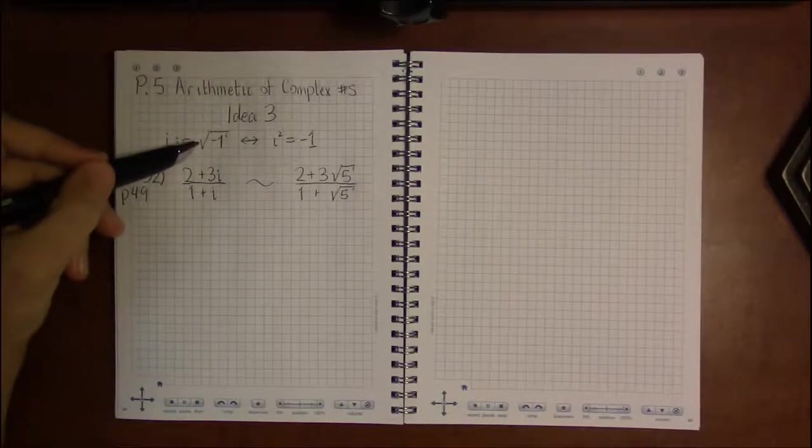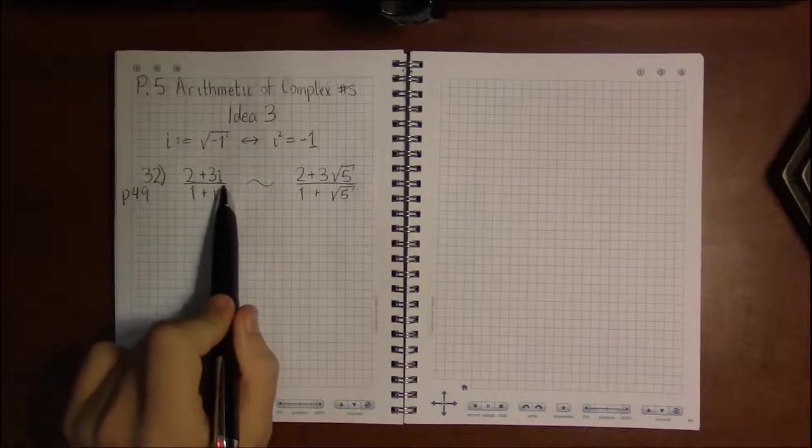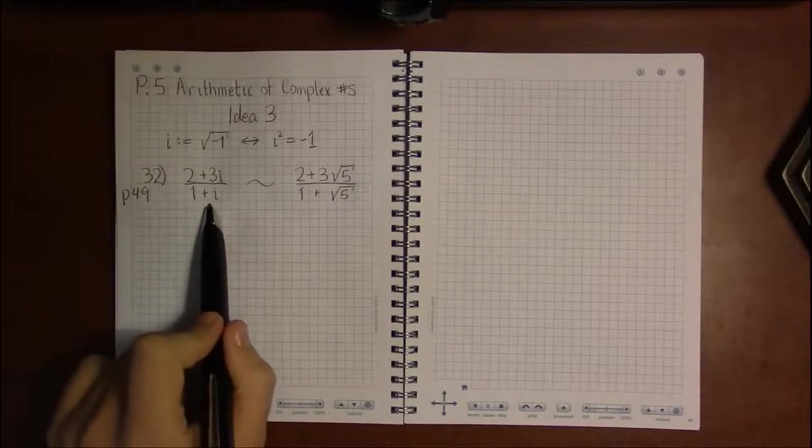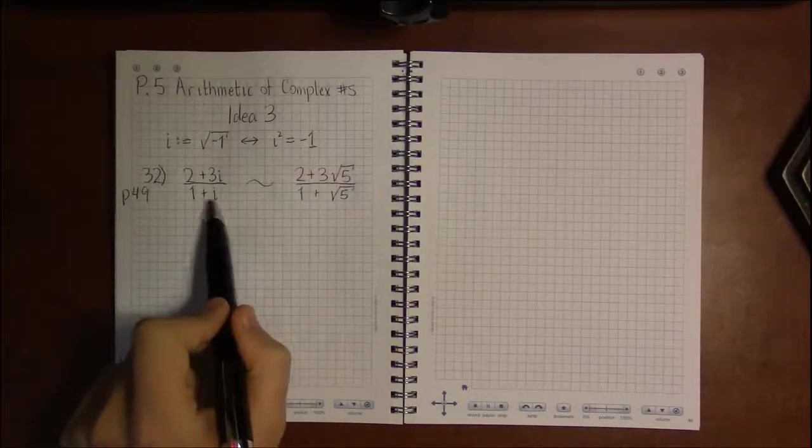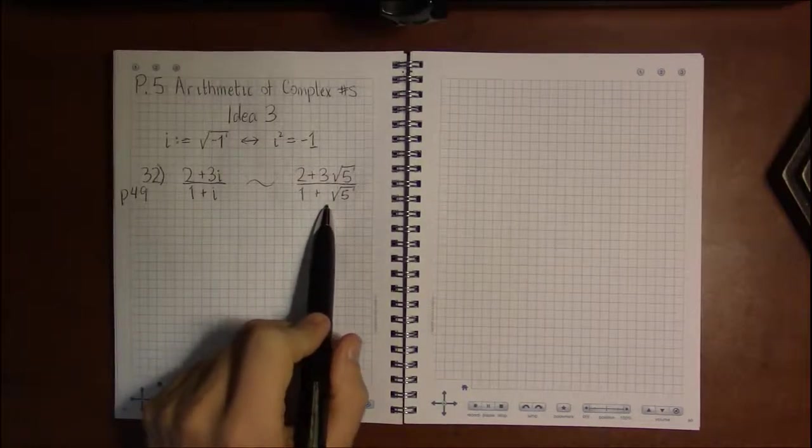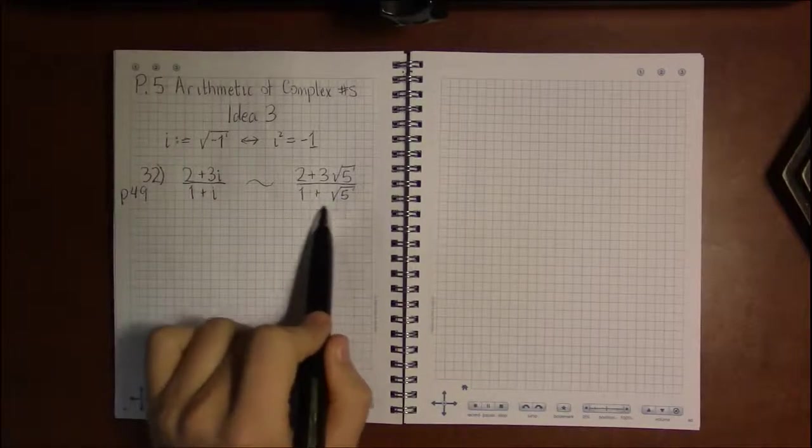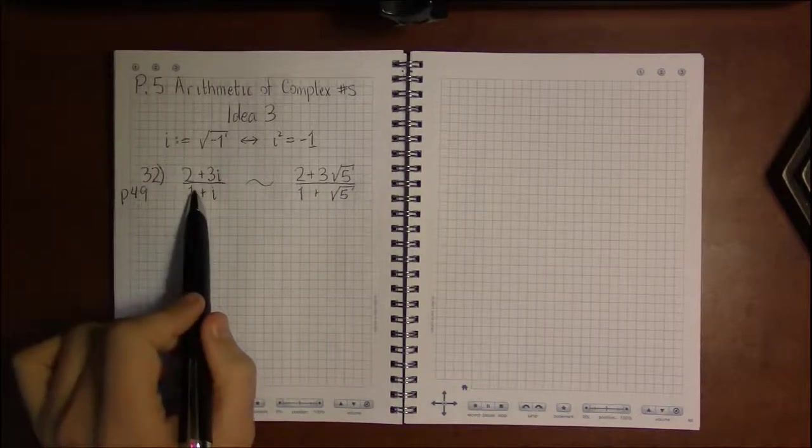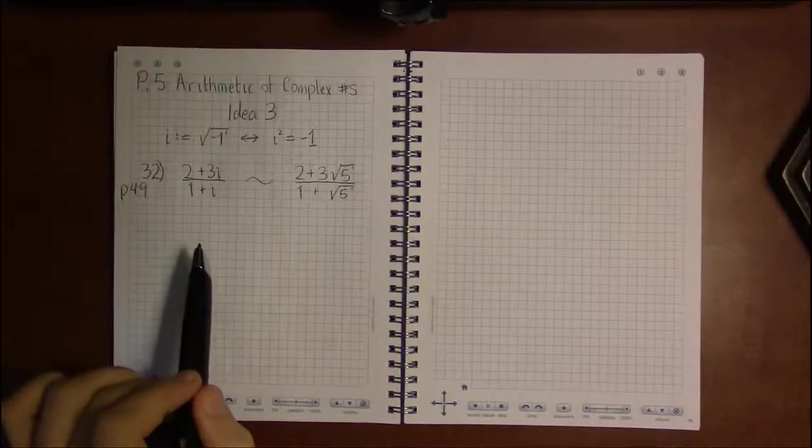Now, since i is a square root, dividing by 1 plus i is a lot like dividing by 1 plus square root of 5. Both of these have square roots in the denominator. And at times, it's nice to be able to get the square root out of the denominator, because your answer is going to be a much simpler result.